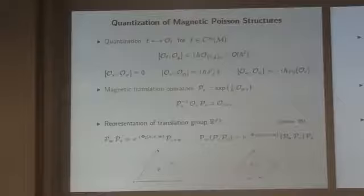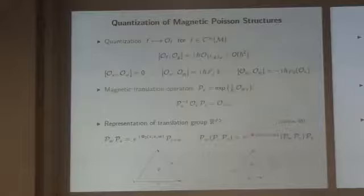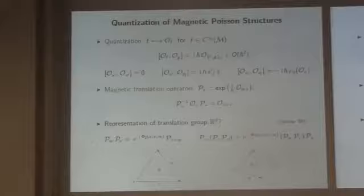It turns out these things are three-cocycles of the translation group in a certain sense — this is a very old paper by Jackiw, a really nice paper. But the problem is that the magnetic translation operators are assumed to operate on something, and it's just not clear in this context what these things are operating on. Because they don't associate, we can't represent them on a Hilbert space. One of the goals is to make some of these arguments more precise.